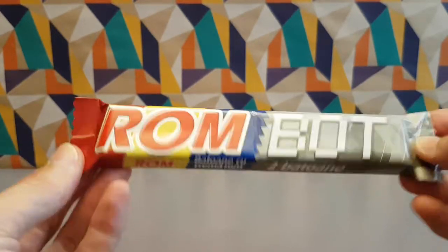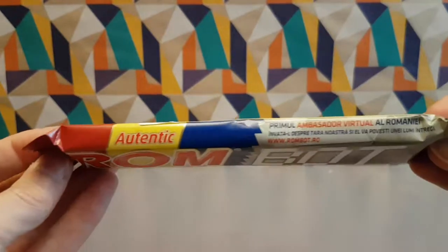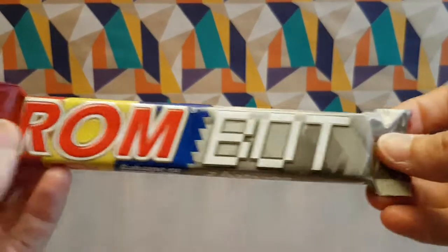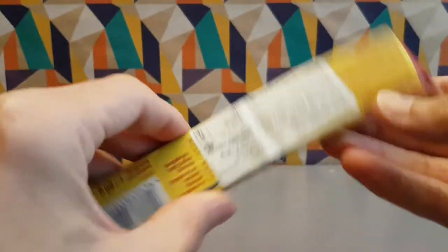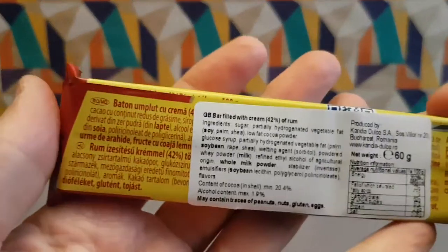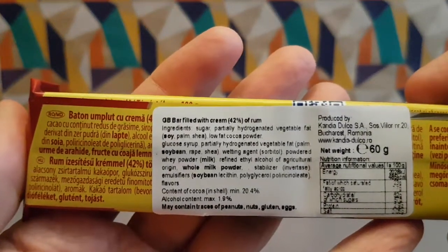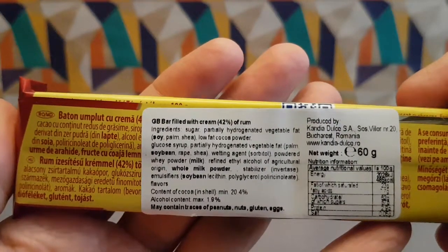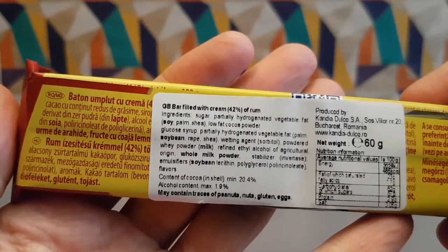For some reason it's called Rhombot because these are Romanian, so if you can read Romanian you can read all this. But luckily on the back there is some English, so it's a bar filled with cream of rum. Interesting. So it's a chocolate bar with some booze in it.